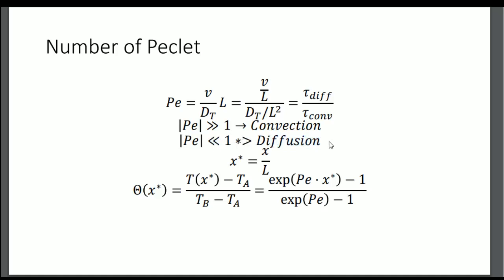Now for the dimensionless formulation: let L be the characteristic length along x. We do the change of variable x* = x/L, and theta equals the temperature at x* minus a reference temperature T_a — which can be the mean, minimum, or maximum. The scale is the max over the mean, and this must equal a specific expression. Solving the differential equation gives theta(x*).